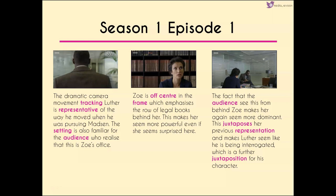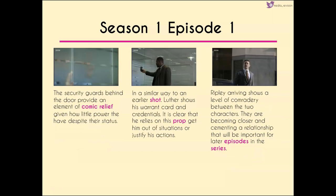Zoe when we see her is off center within the frame, which emphasizes the row of legal books behind her and makes her seem more powerful even if she's sitting down. This is reinforced in the third shot where we are behind Zoe — almost as if we've got her back — making her seem quite dominant. We get juxtaposition here because the previous representation of Zoe was someone who, like many women in crime dramas, stereotypically needs rescuing. Their sitting arrangement also makes Luther seem like he's being interrogated — further juxtaposition, because we wouldn't expect a police officer or detective to be interrogated. The security guards behind the door provide an element of comic relief given how little power they have despite their status.